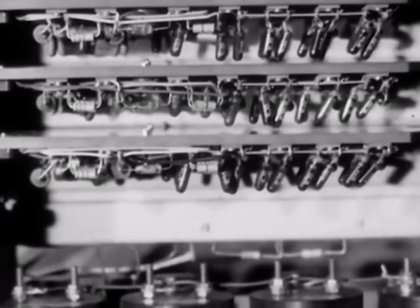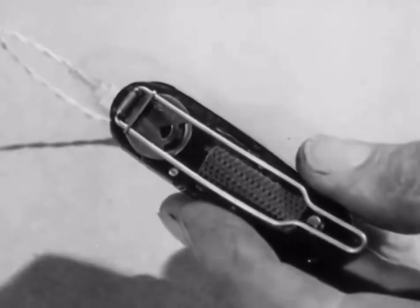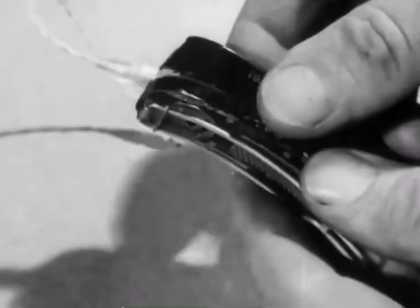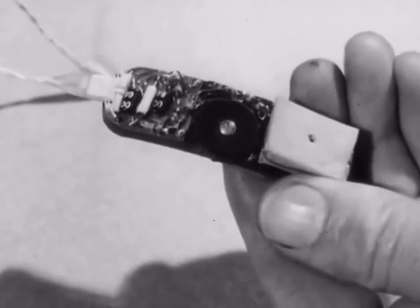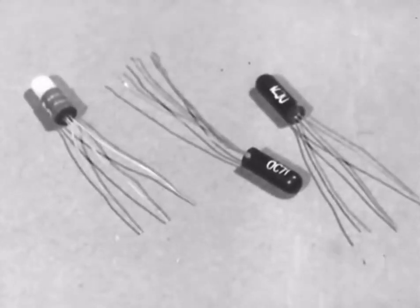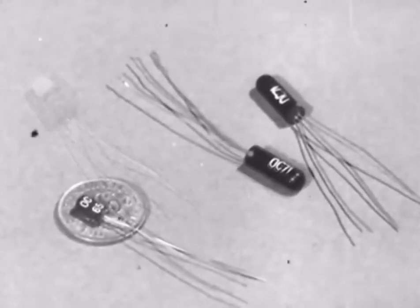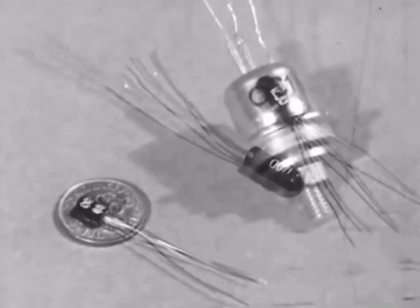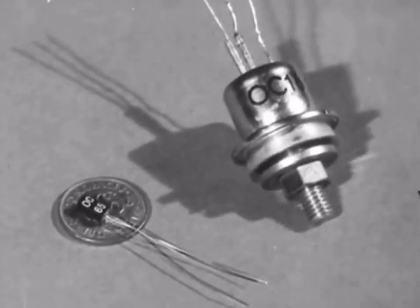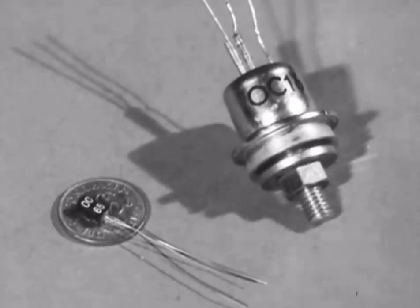One of the earliest applications of transistors was in hearing aid apparatus. This hair grip contains one, complete with amplifier, battery and microphone. Transistors have developed rapidly, from small ones like this to the larger power-type transistors. Research into new techniques continues and fresh applications are being discovered all the time.